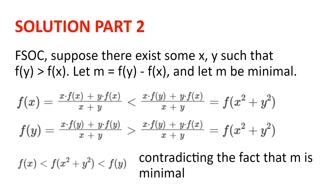So the fact that we arrived at a contradiction means that there do not exist x and y such that f of y is greater than f of x, which means that f of y is equal to f of x for all x and y, and so f must be a constant function, and so we are done.